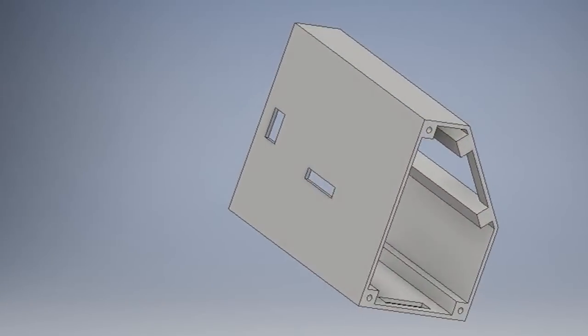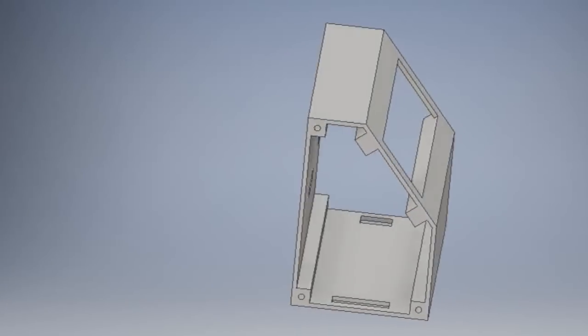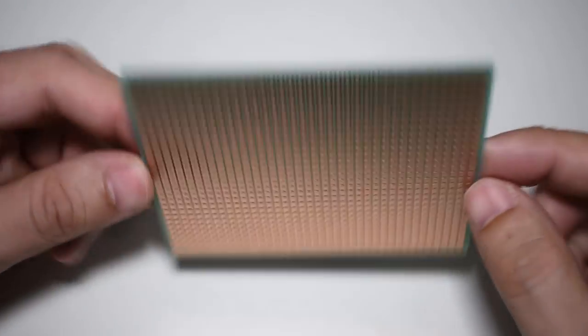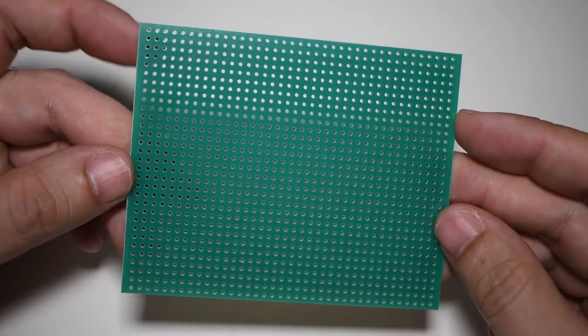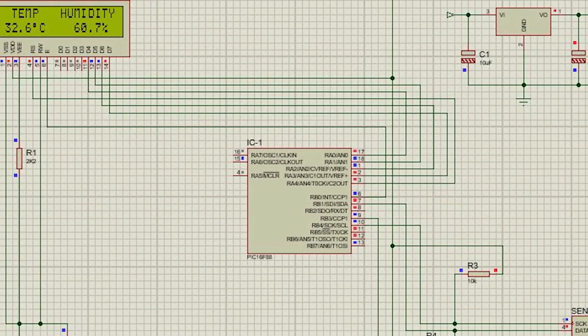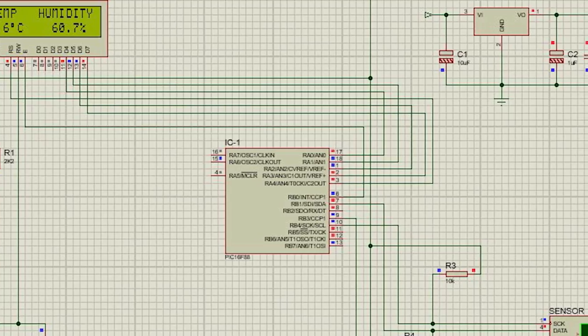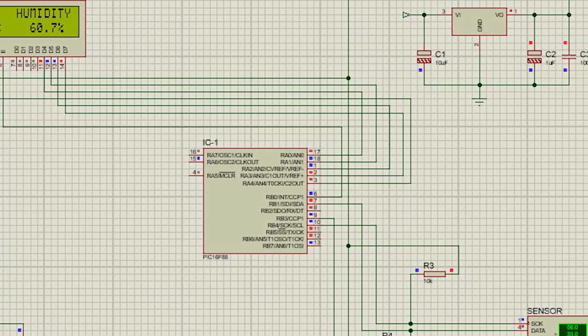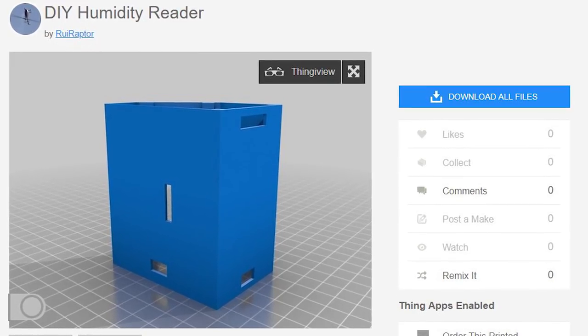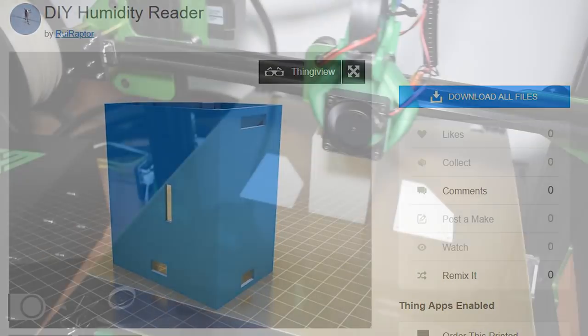I also designed an easy to print enclosure for it. Because the circuit is very simple, I didn't bother to make a PCB for it. Instead, I used a strip board. All the schematics, hex file for the microcontroller and STL for the enclosure can be found in my account on Thingiverse. Just check the video description for the link.